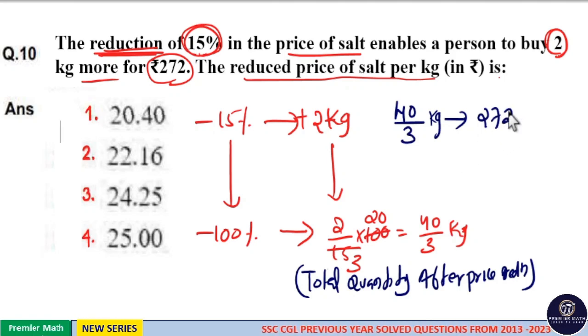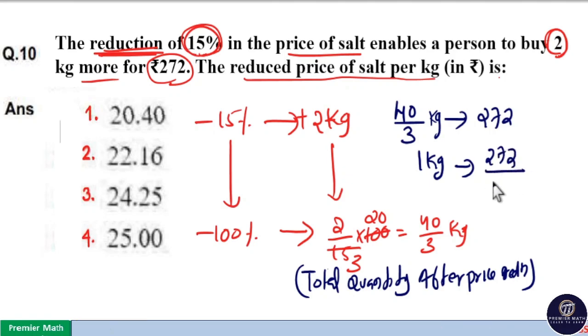Now for Rs.272 after price reduction we will get 40 by 3 kilogram quantity, which means 1 kilogram amount cost 272 divided by 40 by 3, which means 3 by 40 multiplied by 272.